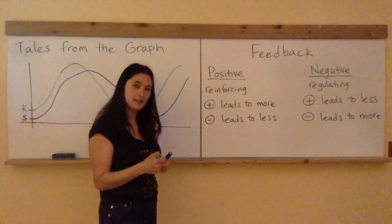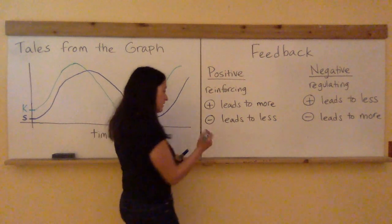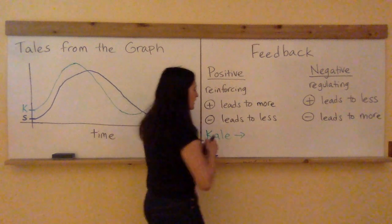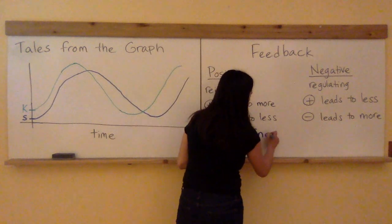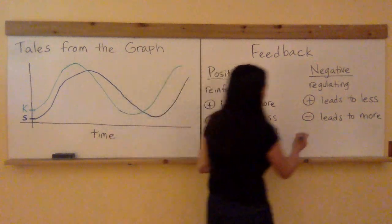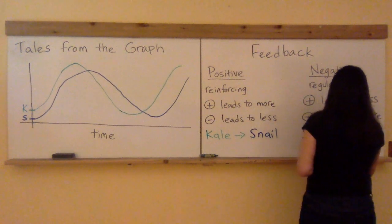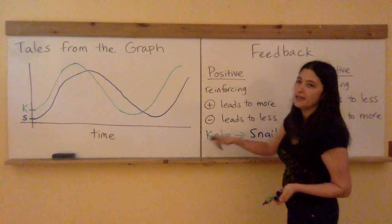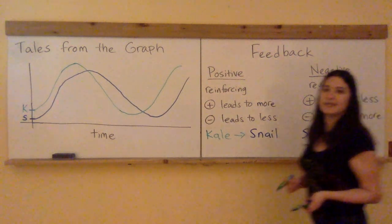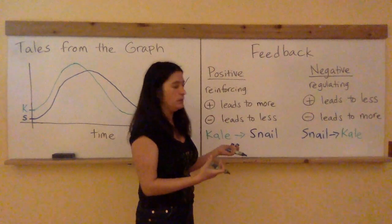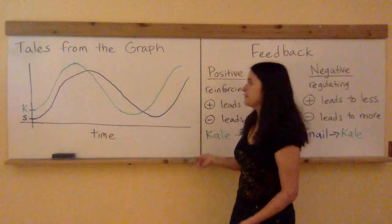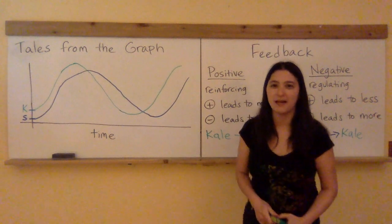How it pertains to our tale here is that positive kale gives a positive feedback to the snails. So when there's more kales there's more snails. For negative feedback, more snails eat the kales and so more snails are gonna lead to less kales and so you've got that negative feedback there where you have the snails regulating the kales. I hope you enjoyed this snail kale tale from the graph.